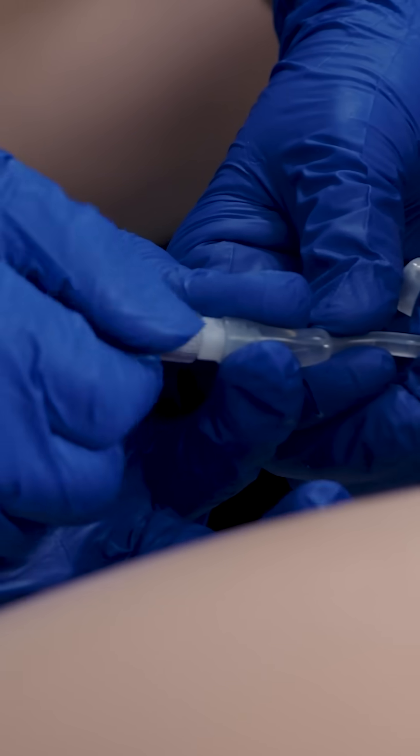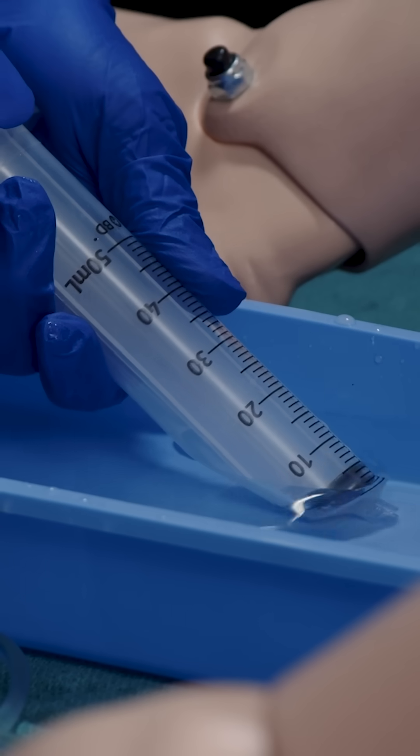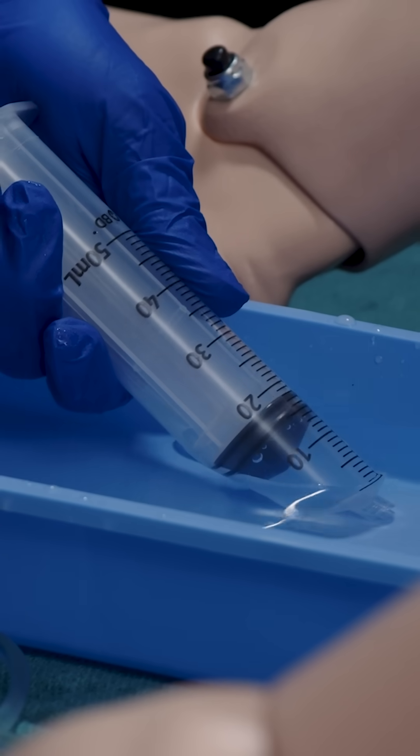There are two ways to fill a Bakri balloon. This is the manual way. Draw up 50 milliliters of sterile saline.